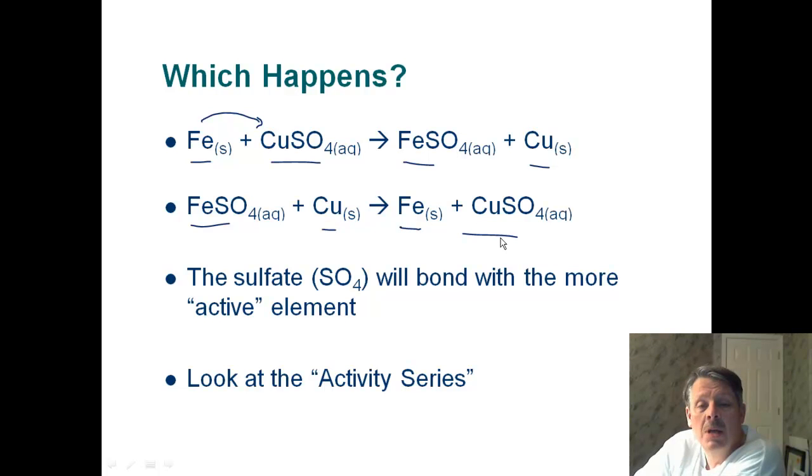Well, guys, the bottom line is only one can happen. It can't do both. So the deal is the sulfate, the sulfate ion, that's the negative thing over here. Remember that iron and copper are both positive. The sulfate is negative. So the SO4 is the negative thing. Would it rather be with the iron, or would it rather be with copper?